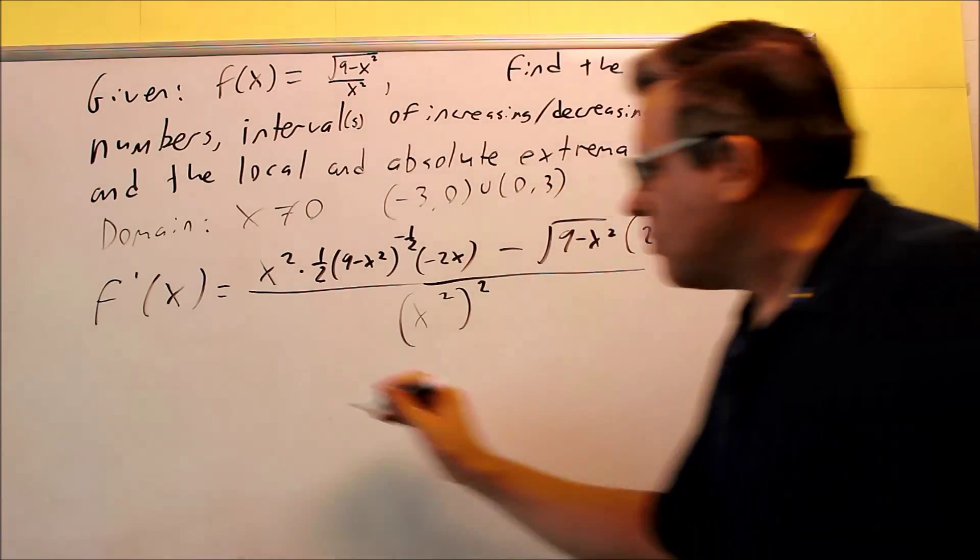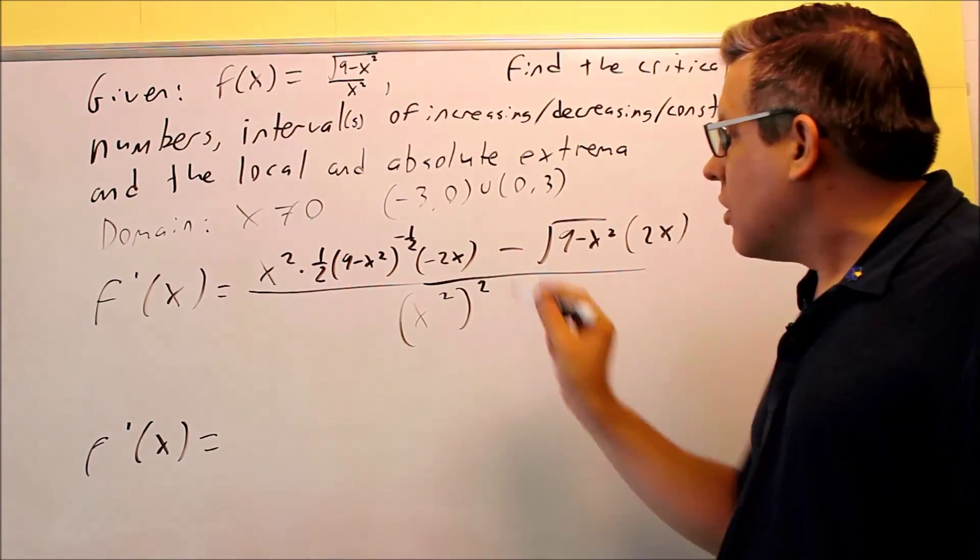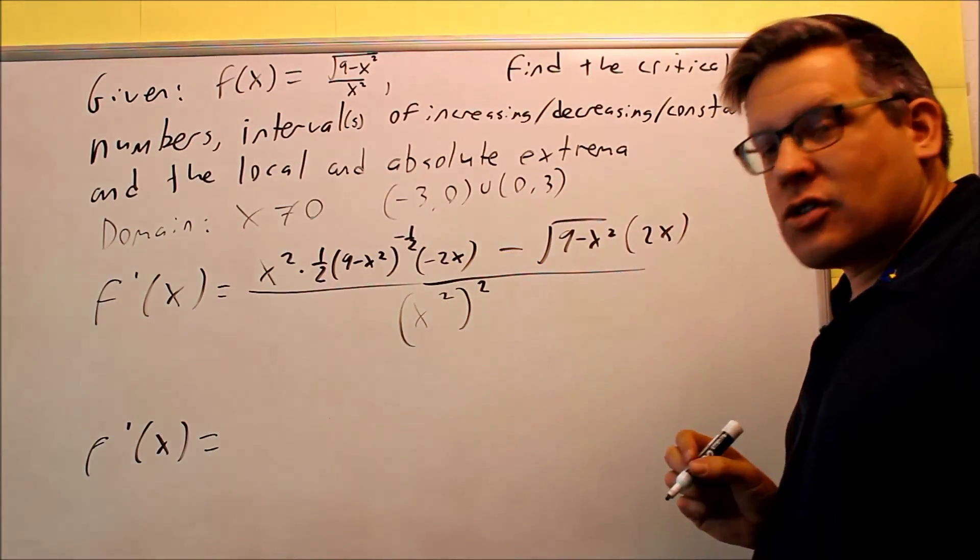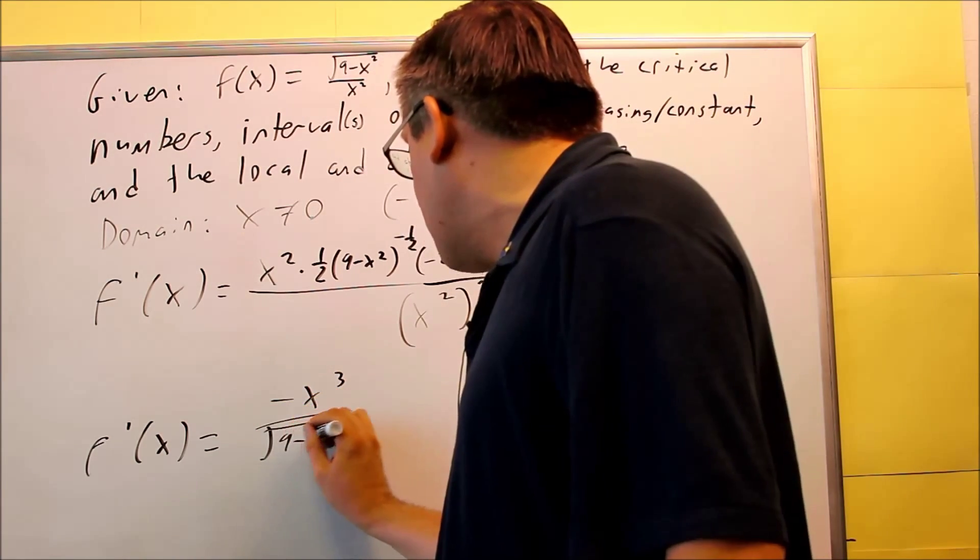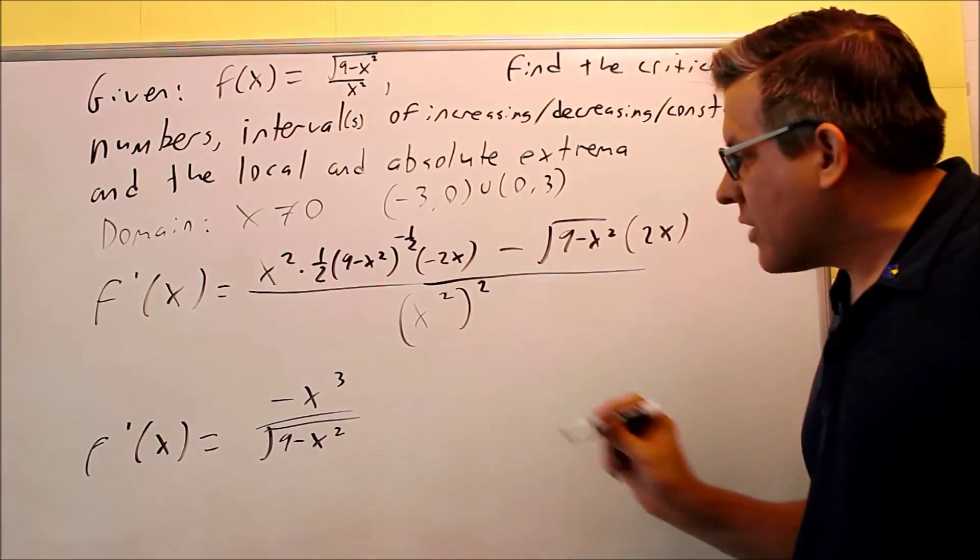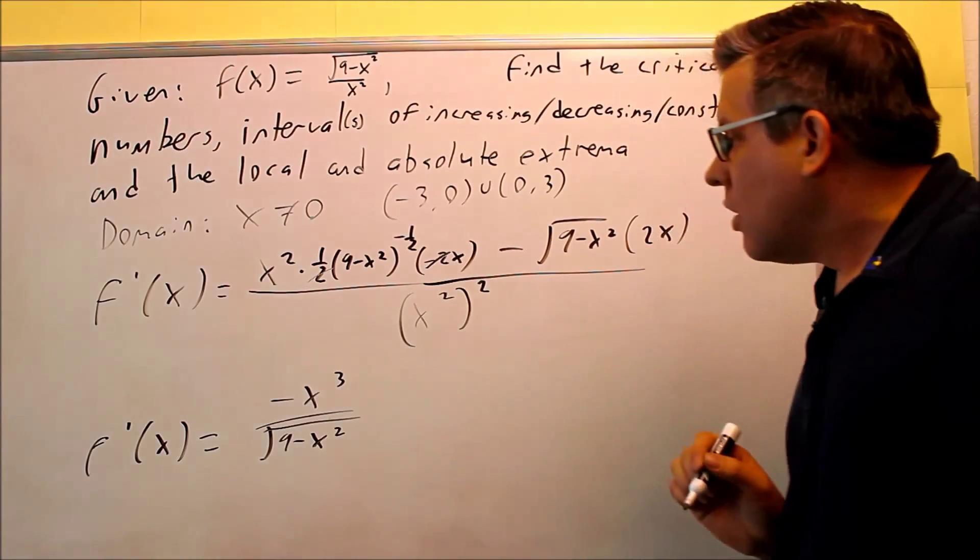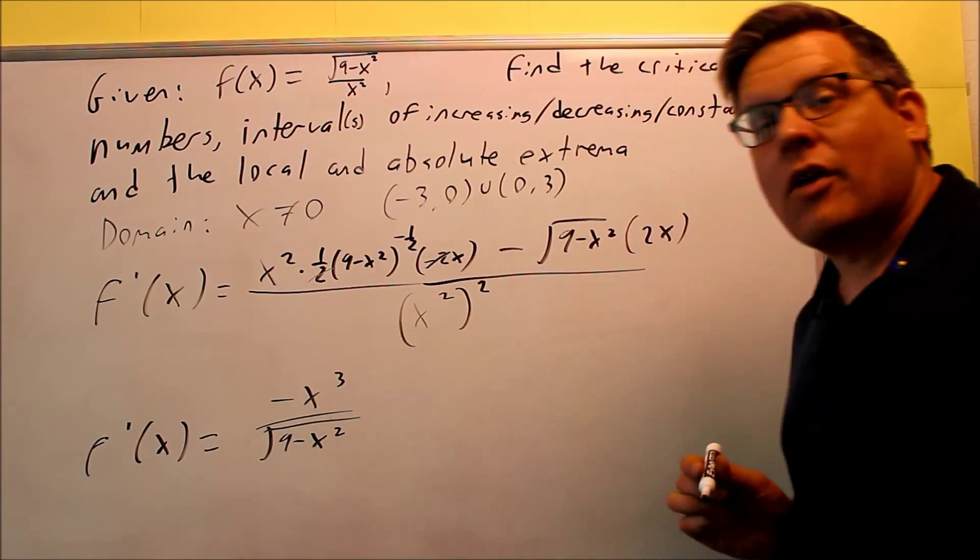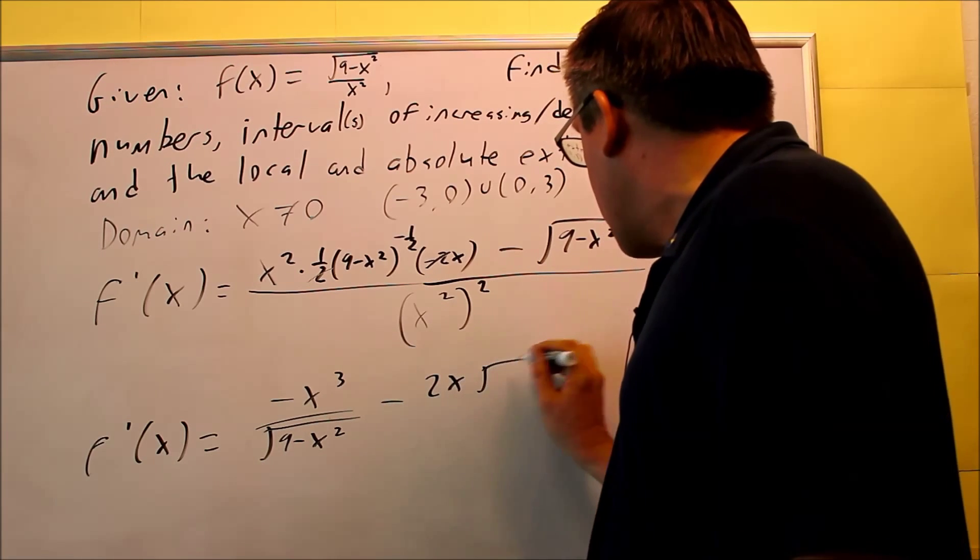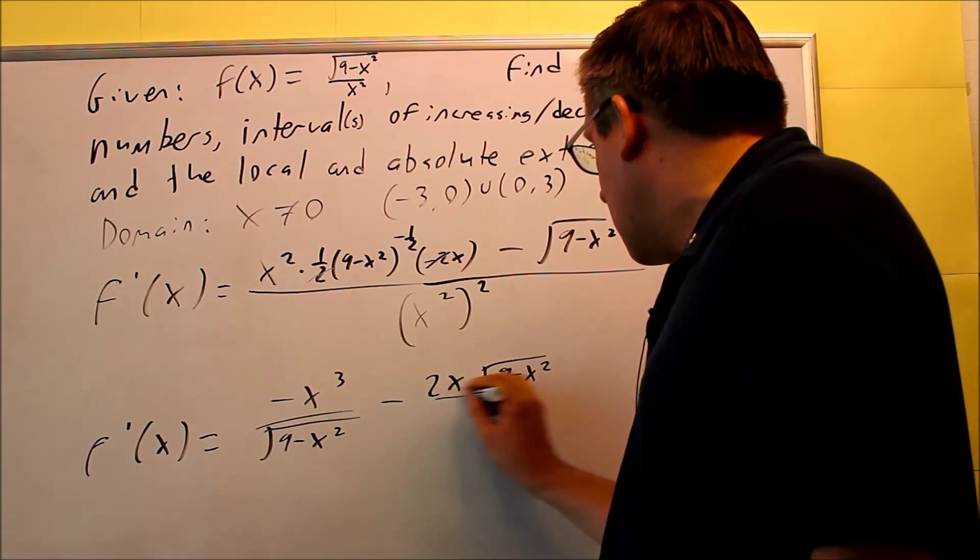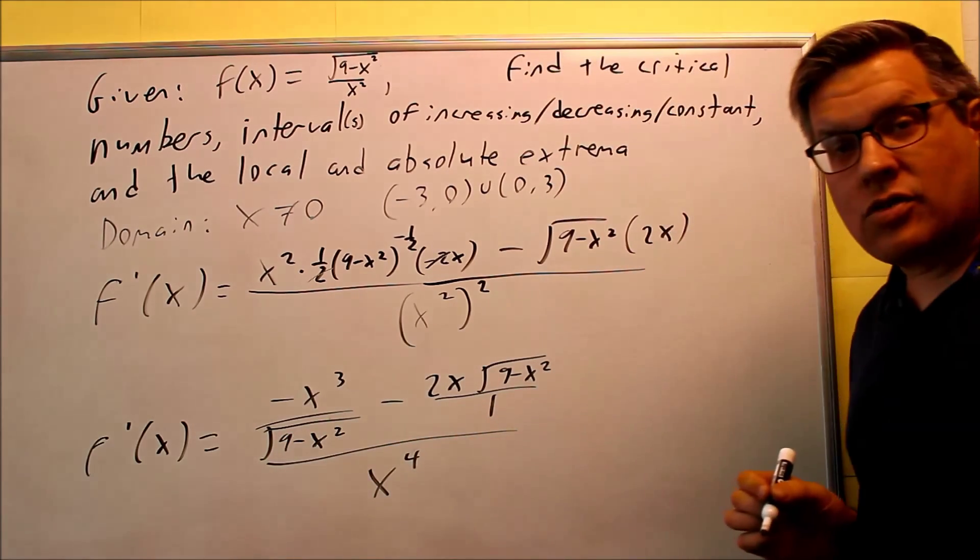Now I have to clean this up. So f prime of x, I get... the 2's are going to cancel here. I get x times x squared. I get negative x cubed on the bottom. Square root of 9 minus x squared. And there's a 2 out. So 2 is gone. So this and this cancel. And then if I clean it up, this is what I have left over. I get this part here. Then I have a minus 2x square root of 9 minus x squared. And that's going to be over 1. And of course, all this again is going to be over x to the 4th.